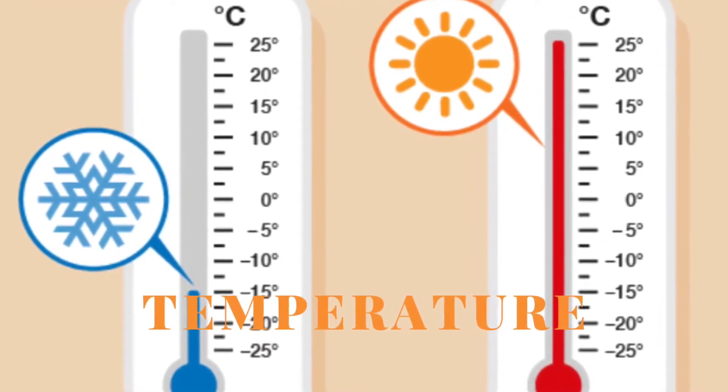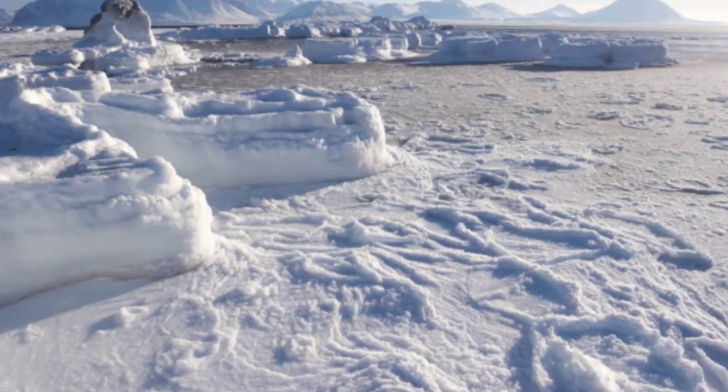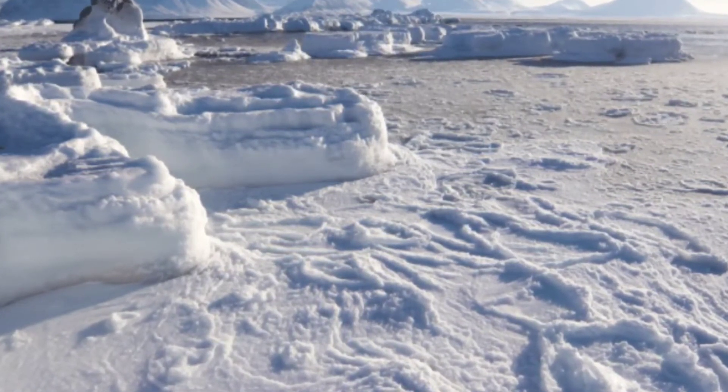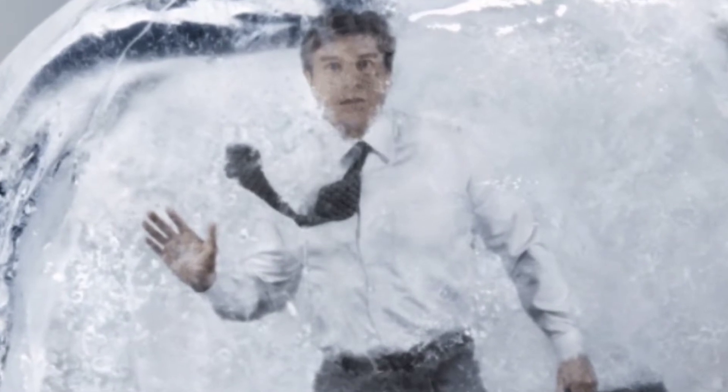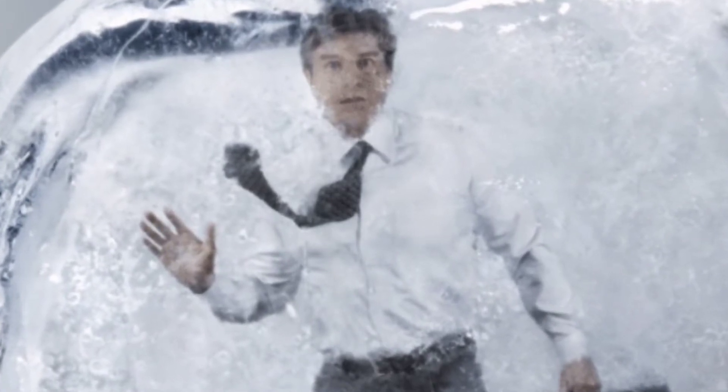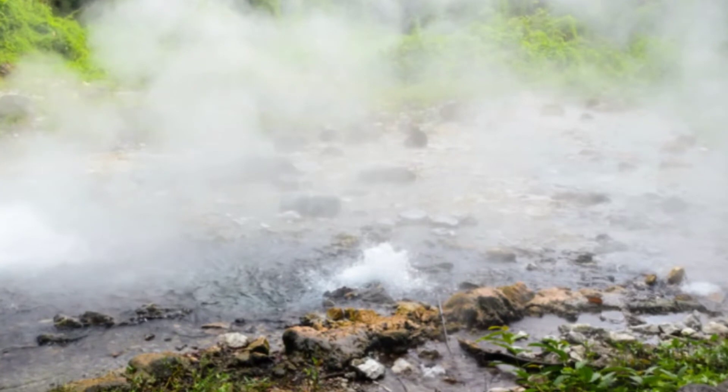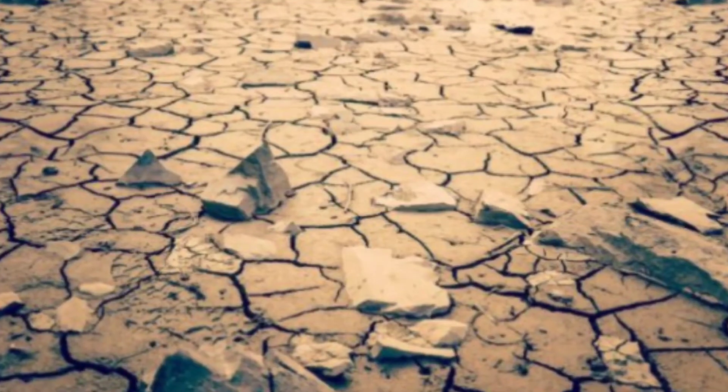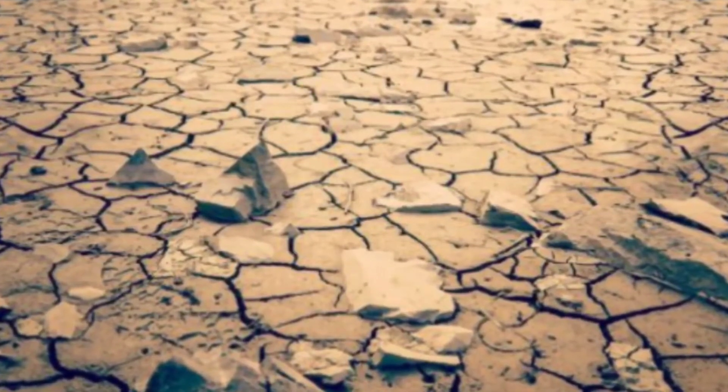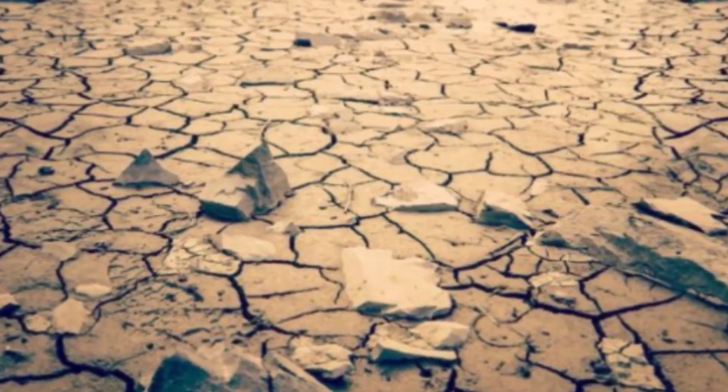If Earth's temperature is too low, it would freeze all the water resources on Earth and it will be too cold for humans to live. On the other hand, if Earth's temperature is too high, liquid water would evaporate into the atmosphere, and Earth's temperature would be too hot for humans and other living things to live.